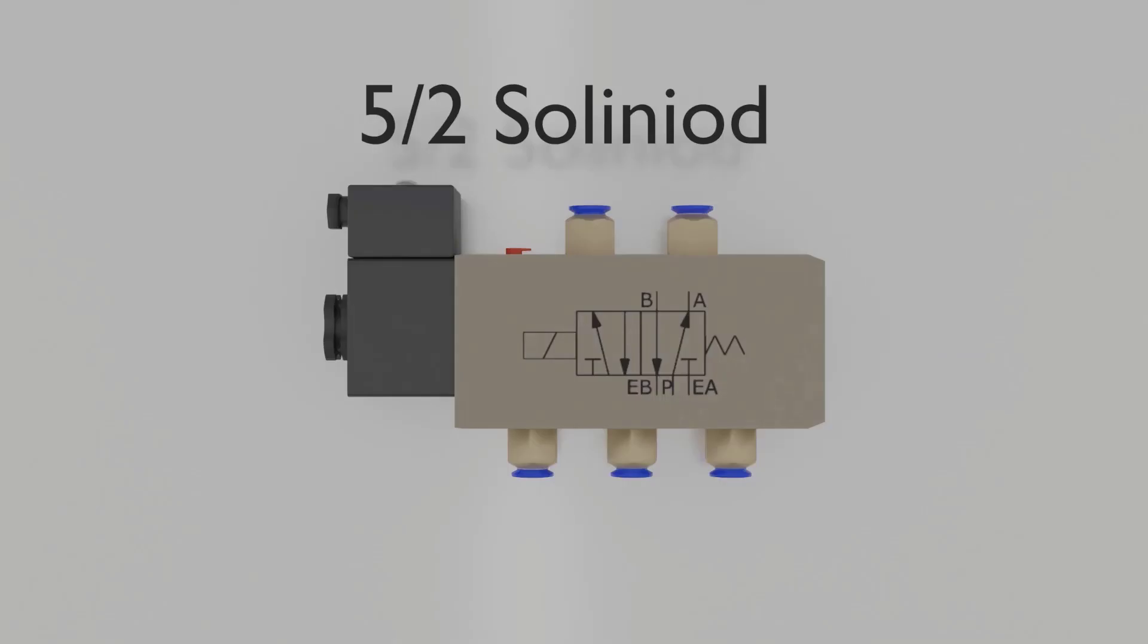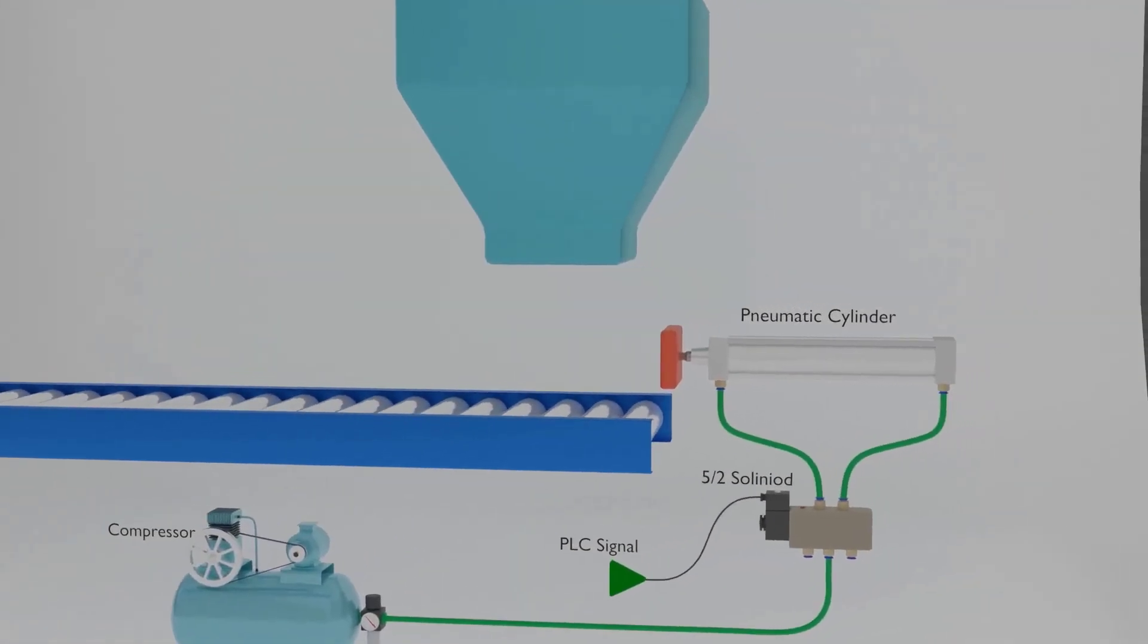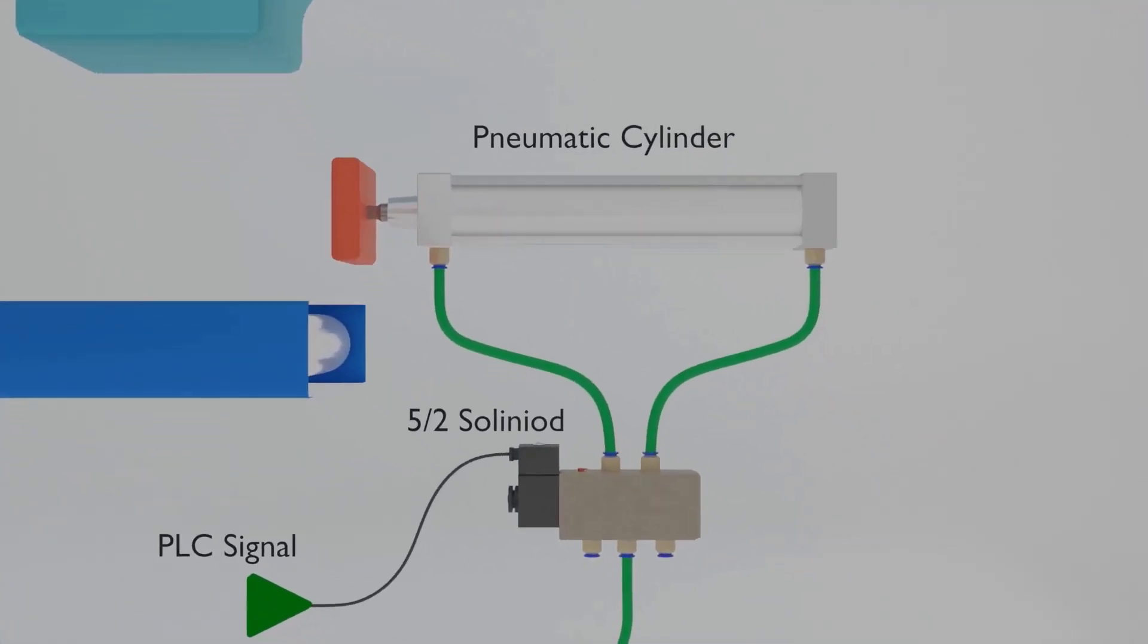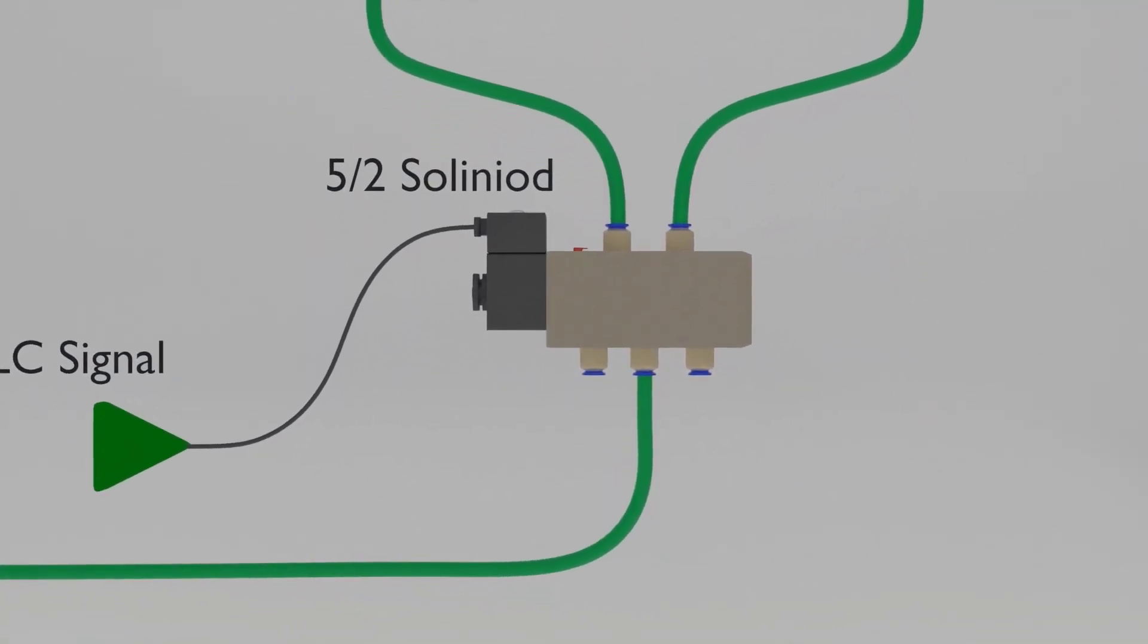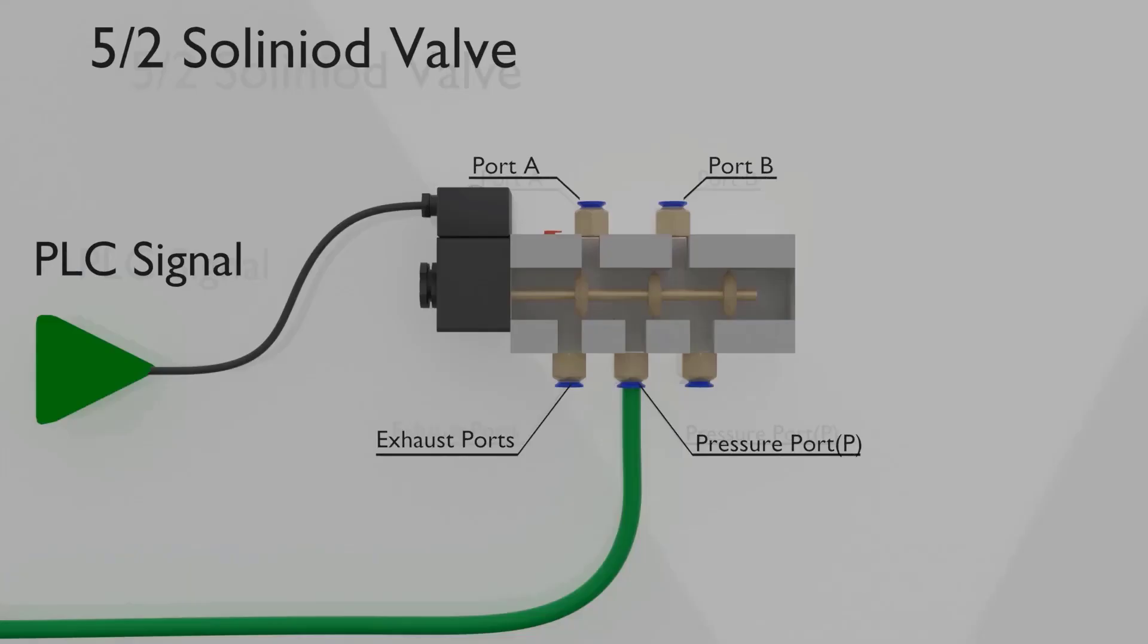A 5/2 way valve has 5 ports and 2 positions. This is why we call it a 5/2 way valve. 5 is for 5 ports and 2 for 2 positions. You might be still worried and you have a lot of doubts so far, but I will guarantee you if you watch this video till the end, you will get a much better and clear understanding about today's topic.